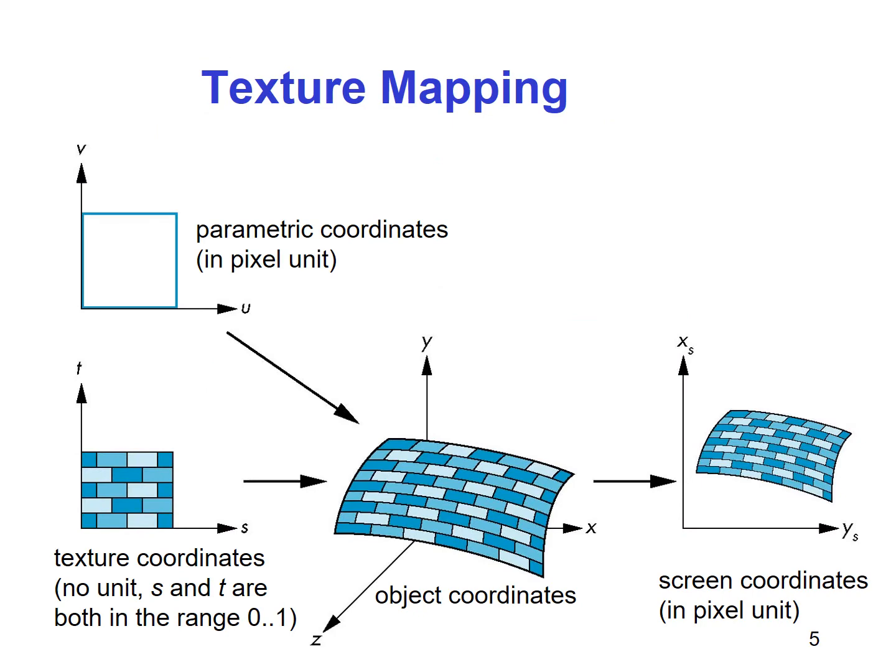Parametric coordinates are in pixel units, say U and V. Texture coordinates have no units; they range from 0 to 1, S and T. Using parametric coordinates and texture coordinates, we can find out a mapping from a pixel to a point on the 3D surface of the object. Once this is done, a mapping is required to be performed from the object coordinates to the screen coordinates.